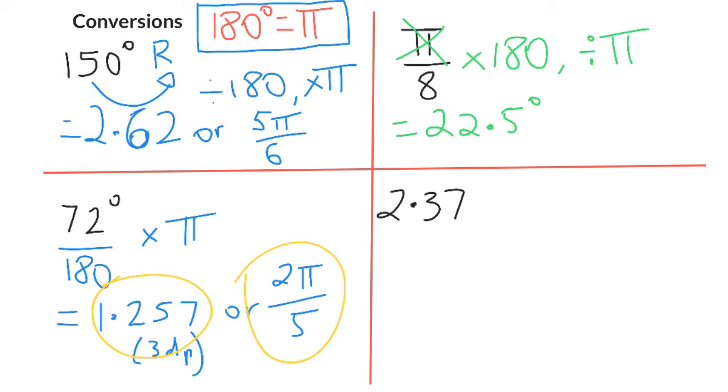Now the 2.37 however is not going to be as pleasant. This time I'm going to divide it by π and multiply by 180, expecting my answer to be a little bit messy. And I end up with 135 degrees and 47 minutes. That's the nearest minute there.